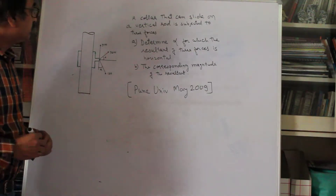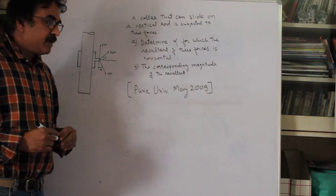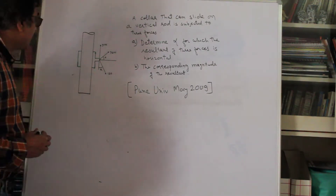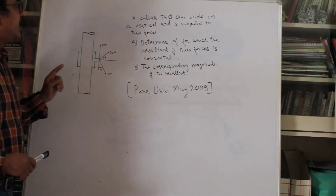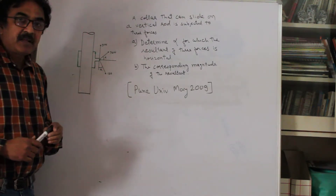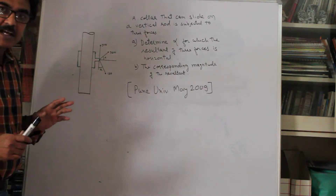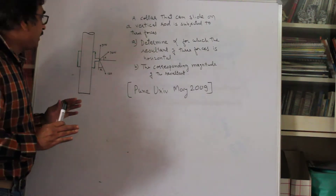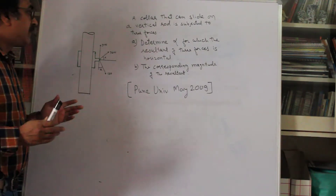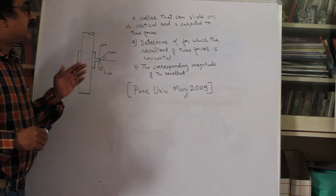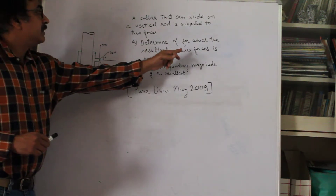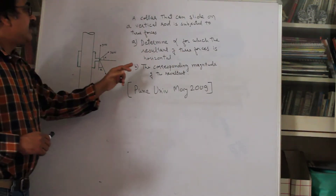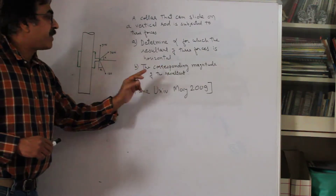Welcome back. This is the next problem, which was asked in a previous question paper. There is a collar that can slide on a vertical rod, subjected to three forces as shown in the figure. You want to find the angle alpha — there are two angles alpha whose values are not given — and you are told the resultant of these three forces is horizontal. You are also expected to find the corresponding magnitude of the resultant.